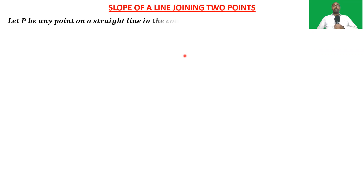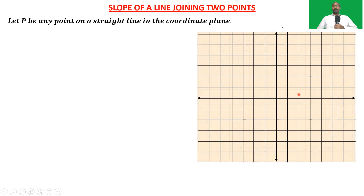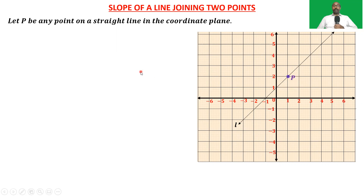Let P be any point on a straight line in the coordinate plane. Here we have the coordinate plane with the x-axis, y-axis, and the graph, and these are the values on the x-axis and y-axis. L is a straight line and P is a point on the straight line. We can notice that the coordinates of P are 1 and 2. Enter the coordinates of P in a table.